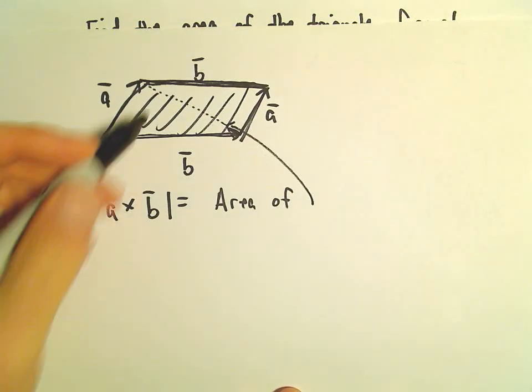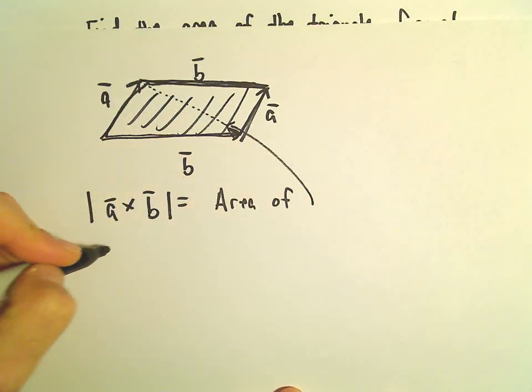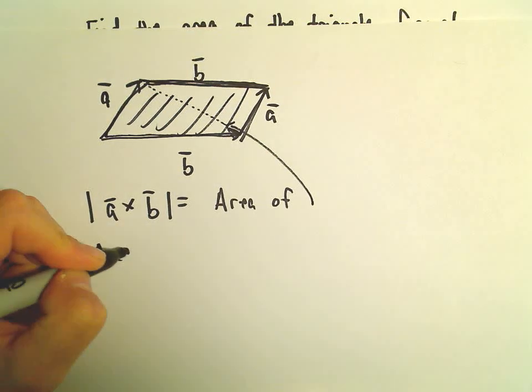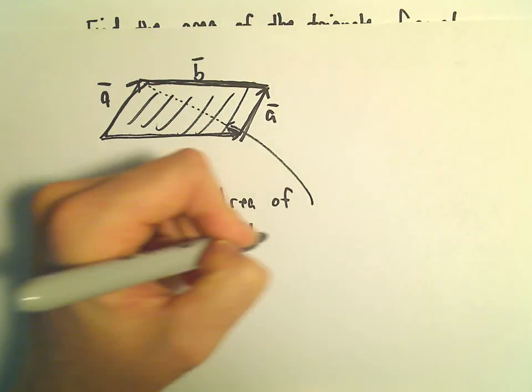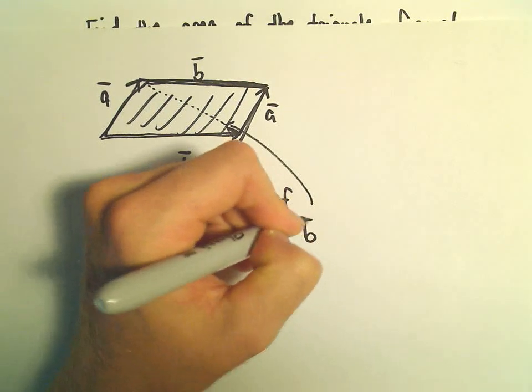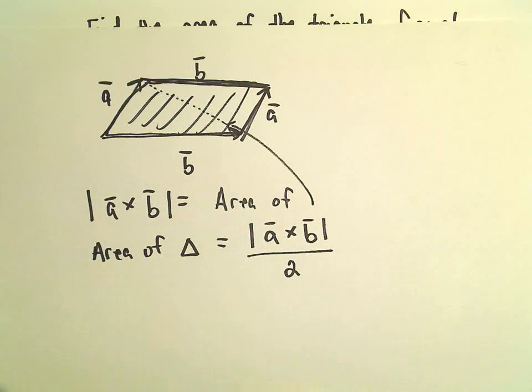Okay, so if we only want the triangle, that's half of that. So that tells us that the area of the triangle is just going to be the magnitude of A cross B. And then we'll have to divide that by 2. So this is what we're going to have to compute.